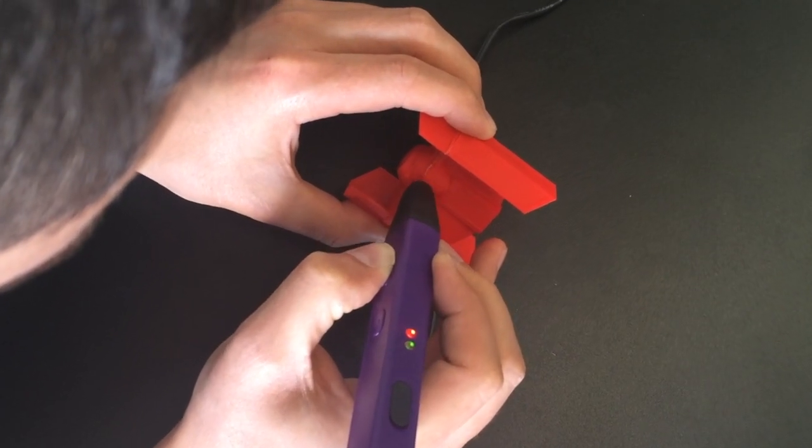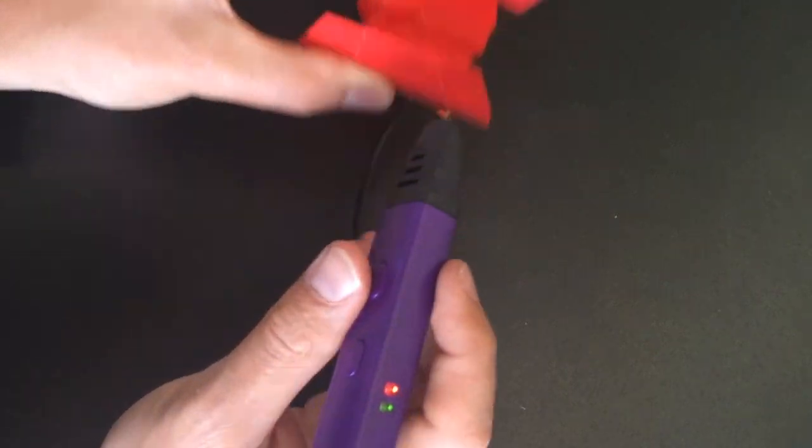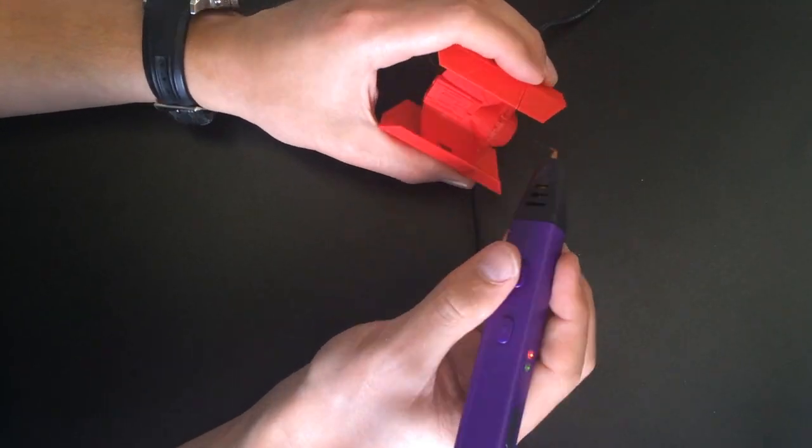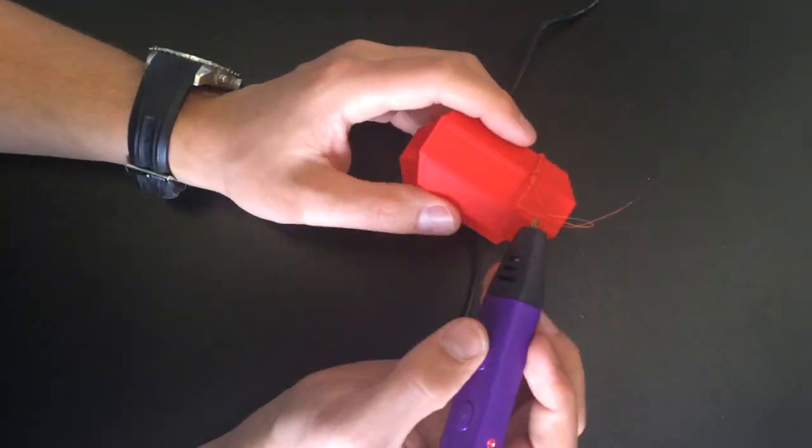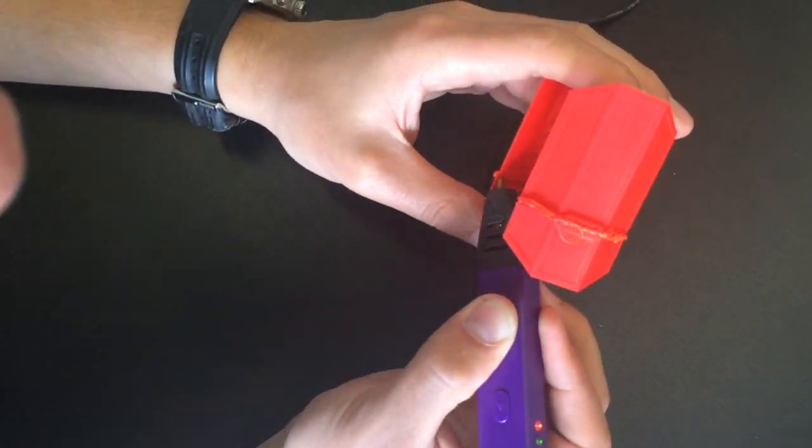To do this you want to just push down really quite hard in the join with the filament that you're extruding from the pen and do that in all the joins just to help really stick them together.